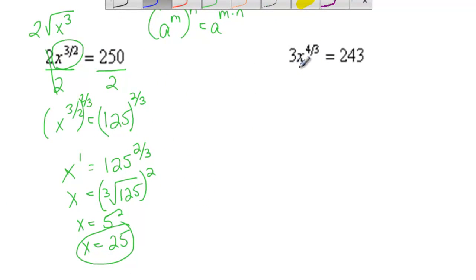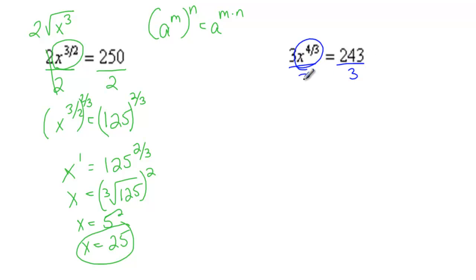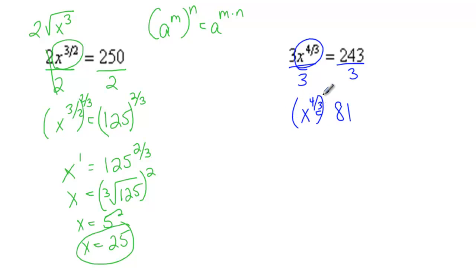Here we have 3x to the 4 thirds equals 243. I'm going to divide both sides by 3 because I want to get that x to the 4 thirds by itself. So I get x to the 4 thirds equals 81 — that's 243 divided by 3 is 81. I'm then going to raise both sides to the 3 fourths because that's the reciprocal. This gives me x on the left, and on the right I have the 4th root of 81 cubed.